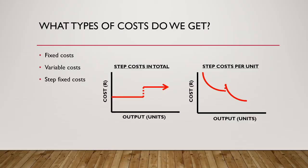Our next cost is our step fixed cost. These costs are fixed within certain activity levels; however, once we exceed the specified activity level, we need to incur a step increase. We can consider the example of factory rental. We could pay 10,000 Rand for rental, and this factory could have a capacity of 1 million units. If we want to increase production beyond 1 million units, we need to acquire a second factory, for which we can again pay 10,000 Rand for rental, giving us a maximum capacity of 2 million units. Each time we reach the critical activity level, we need to incur more fixed costs in order to increase production, and therefore move up a step in our cost function.